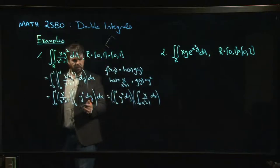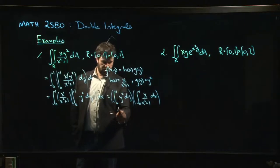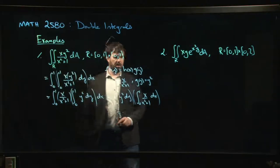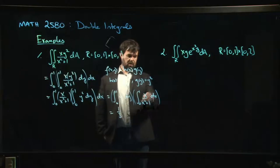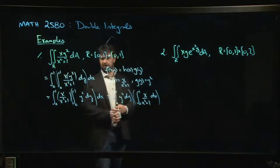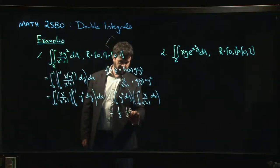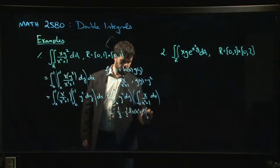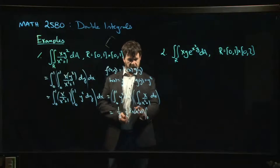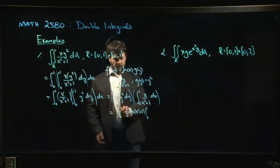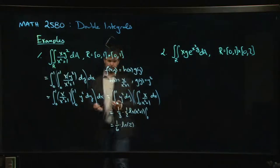We evaluate these using standard methods. Power rule: the antiderivative of y squared gives us (1/3)y³ from 0 to 1, which gives us 1/3. For the x integral, we do a u-substitution: let u equal x squared plus 1, so du equals 2x dx, meaning x dx equals (1/2)du. We get (1/2) times the natural log, since we get 1 over u. So it's (1/2) natural log of (x² + 1) from 0 to 1. When x equals 1, we get natural log of 2; when x equals 0, natural log of 1 is 0. So the overall answer is (1/6) times the natural log of 2.